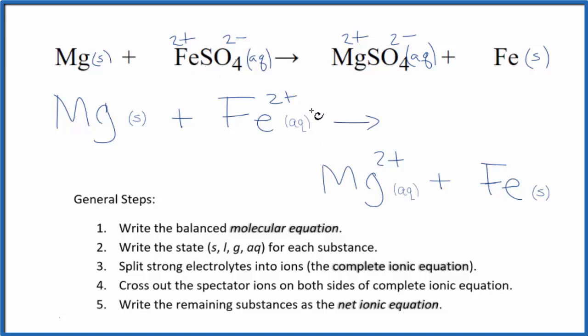You can see that charge is conserved. We have a 2 plus on this side and a 2 plus on this side. And the atoms are the same. We have magnesium, magnesium, iron, iron. So that's balanced as well.